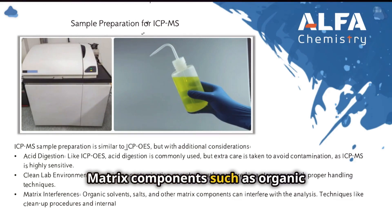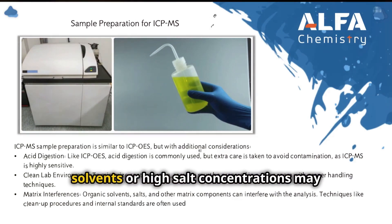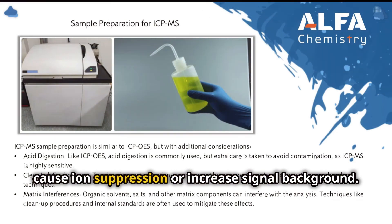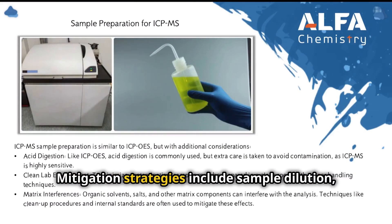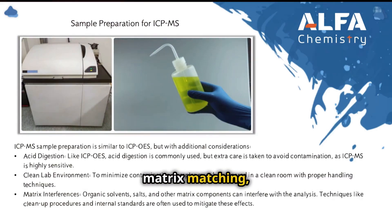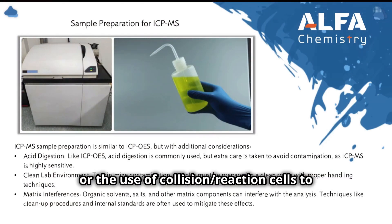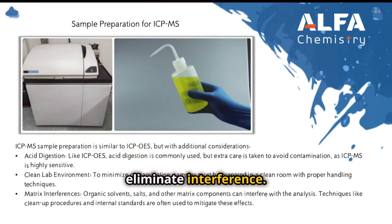Matrix components such as organic solvents or high salt concentrations may cause ion suppression or increased signal background. Mitigation strategies include sample dilution, matrix matching, or the use of collision reaction cells to eliminate interference.